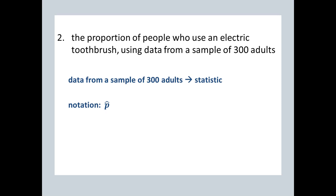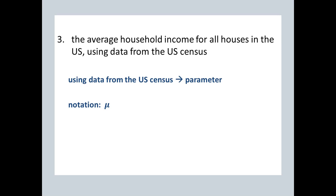The average household income for all houses in the U.S. using data from the U.S. Census? Well, the census includes everybody, so this is a population measure, so it's a parameter. More specifically, it's a population average or population mean, so the correct notation is mu.